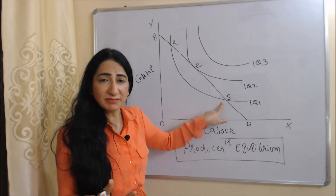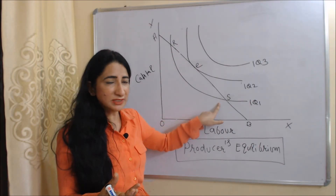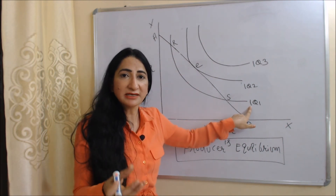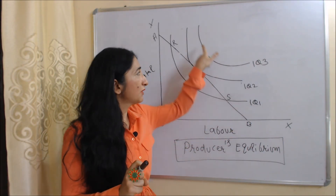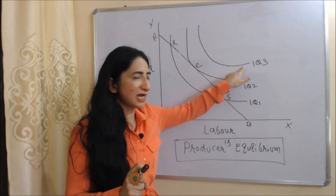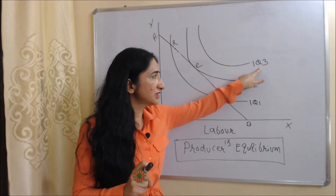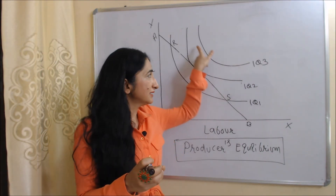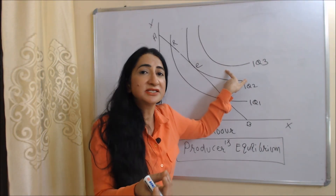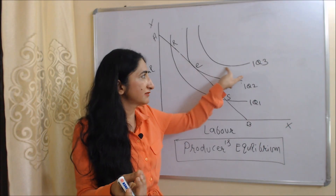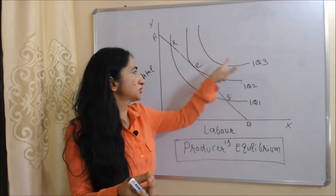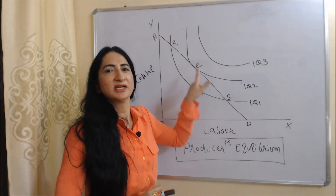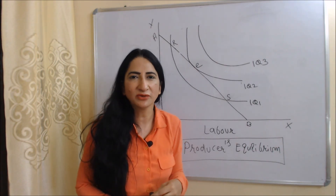We cannot establish equilibrium at points R and S because they lie on a lower isoquant curve, which gives less output. We also cannot establish equilibrium on IQ3, because although it is a higher isoquant giving higher output, it would require higher expenditure beyond the budget. Therefore, point E is our producer's equilibrium where all conditions are satisfied.